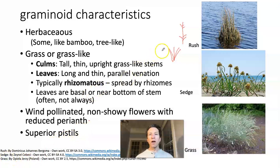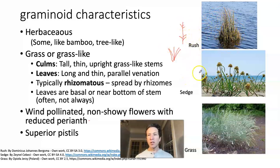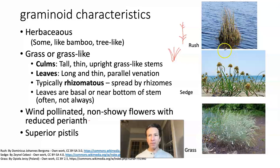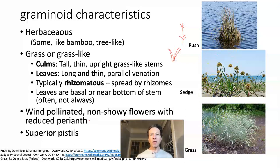I should point out that the picture of a rush shown is literally growing in water, the picture of a sedge is growing near water, and the picture of grass happens to be growing in a dry area. There is a variety of habitats for each of these, but we are seeing them all in places where each would typically grow.